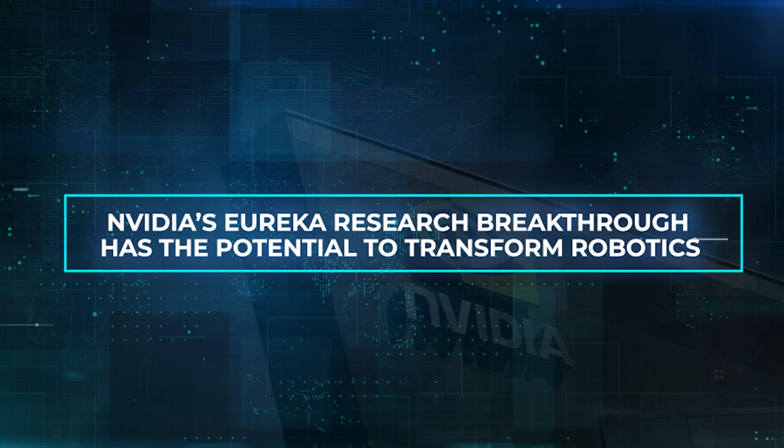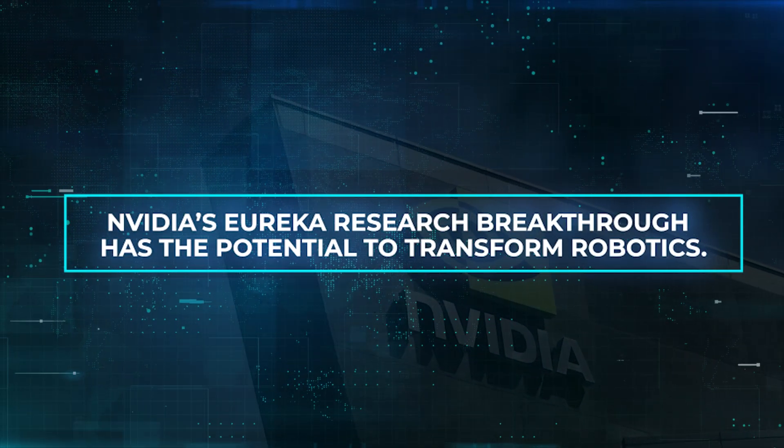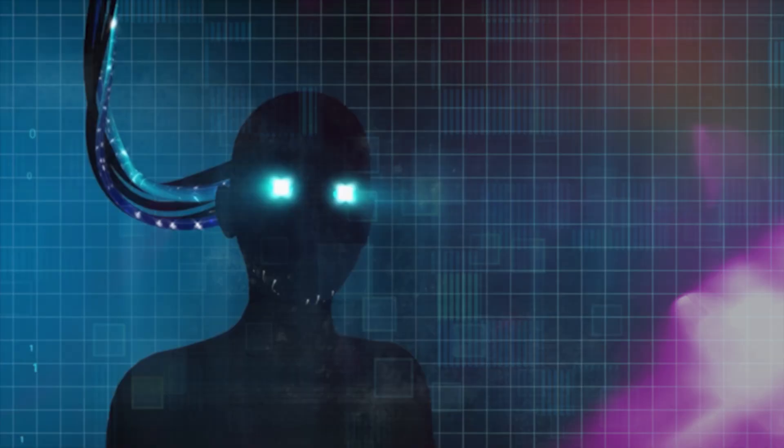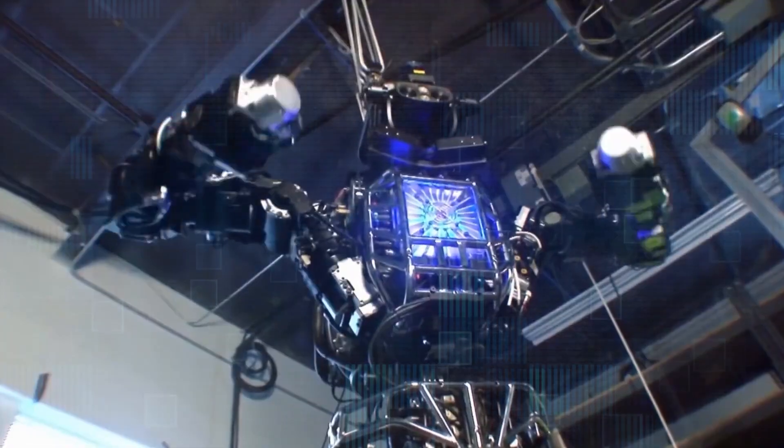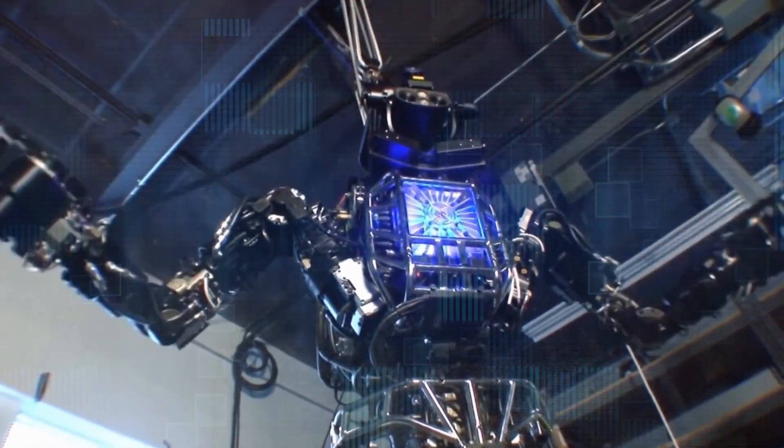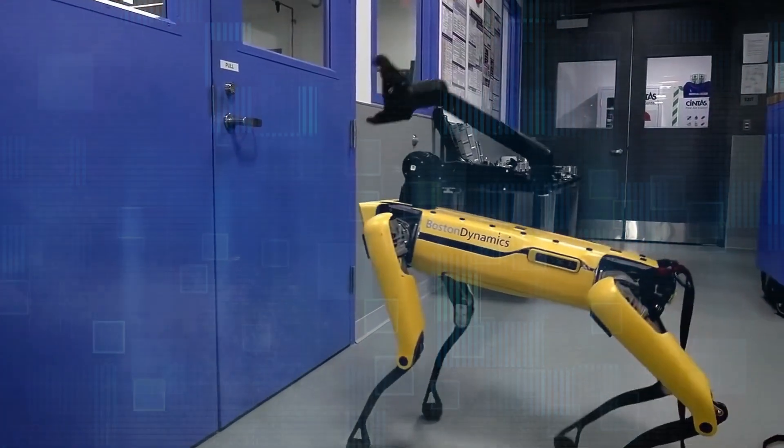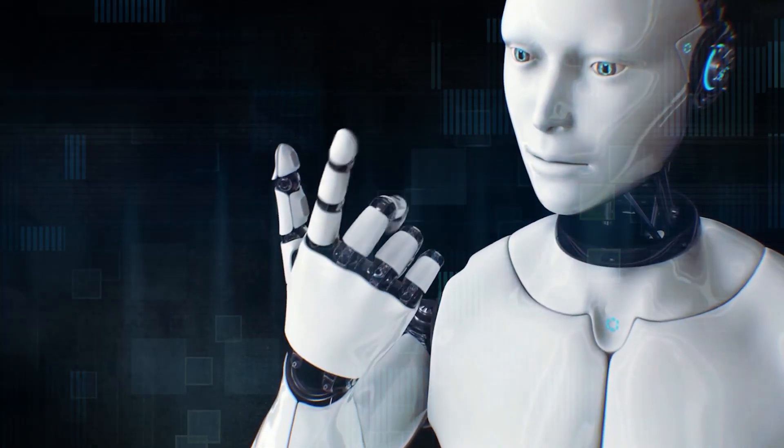NVIDIA's Eureka Research breakthrough has the potential to transform robotics. It can teach robots complex skills, bridging the gap between different levels of tasks. Its use of generative and reinforcement learning makes it efficient, as demonstrated by training a robotic hand for rapid pen spinning.